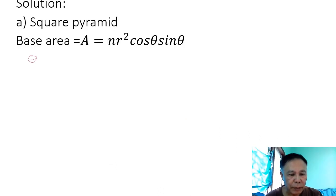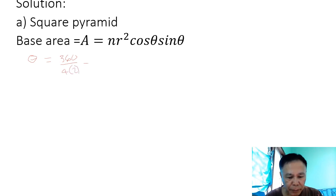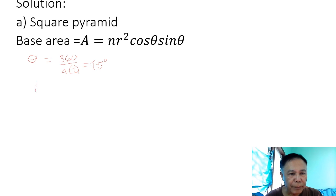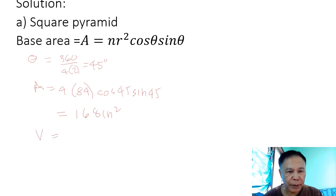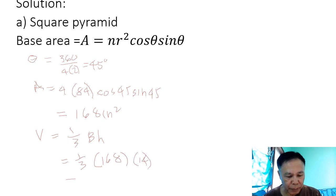For the square pyramid (n=4), theta equals 360 over 4 times 2, which equals 45 degrees. Your area equals 4 times 84 times cosine 45 times sine 45, giving a total area of 168 in². So your volume equals one third times base times height: one third times 168 times 14, giving a volume of 784 in³.